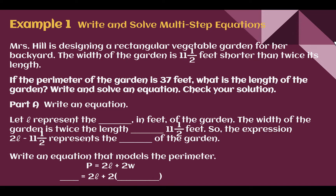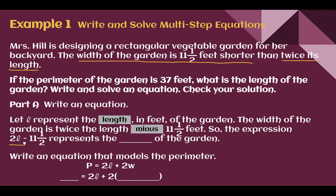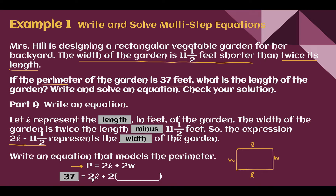Let's break this into parts. First, let's write our equation. Let L — using a curly L so it doesn't look like a 1 — represent the length in feet of the garden. The width is twice the length minus 11 and a half feet, since the width is 11 and a half feet shorter than twice its length. So 2L minus 11 and a half represents the width. Since we're dealing with the perimeter, and the perimeter of a rectangle is 2 lengths plus 2 widths, and the perimeter is 37, we substitute: 37 equals 2L plus 2 times the quantity (2L minus 11 and a half).